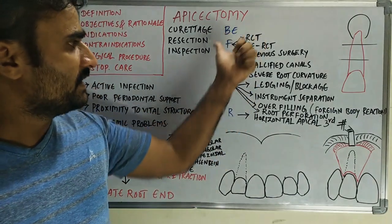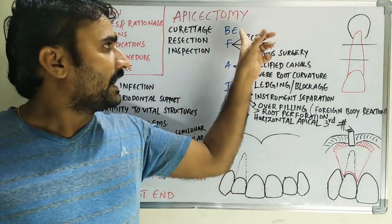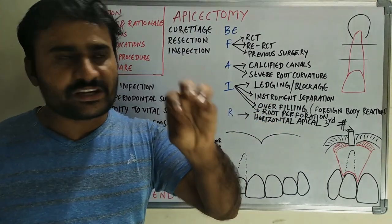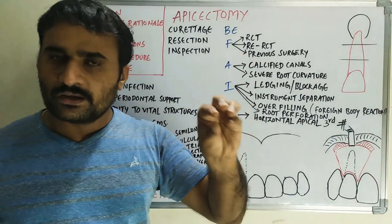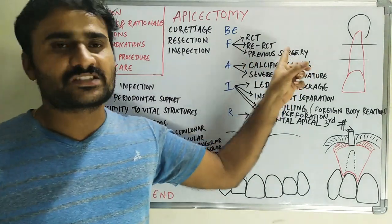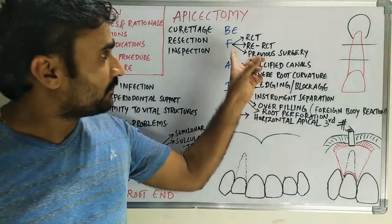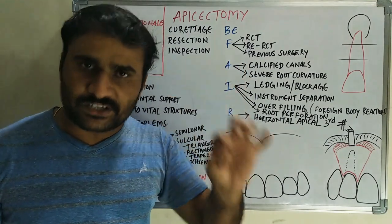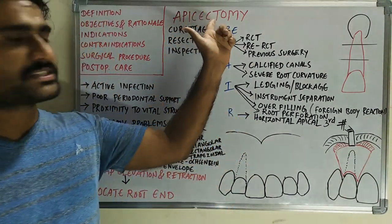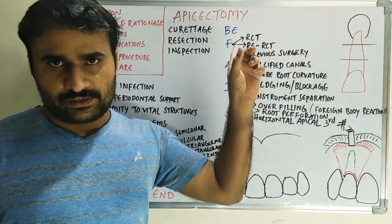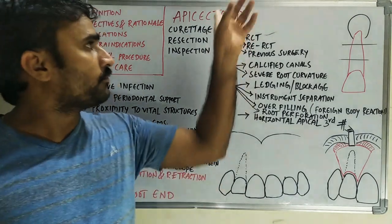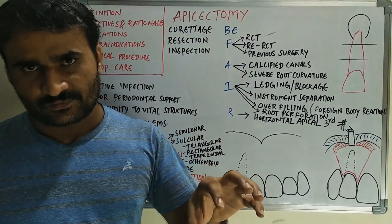The indications can be remembered as B FAIL. B is for biopsy and E is for exploratory surgery, which is a less common indication. F is for failure — failure of root canal treatment, failure of re-root canal treatment, or failure of previous surgery including previous apicectomy. Non-surgical endodontic treatment should be attempted at least twice before going for surgical treatment, i.e., apicectomy.